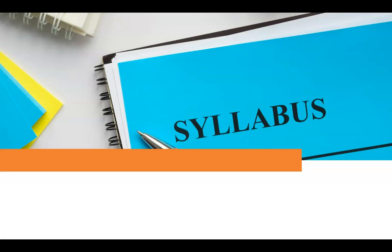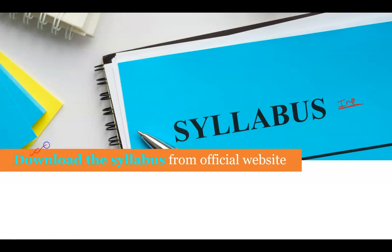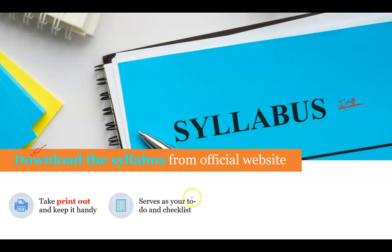The second step for starting your CSIR NET preparation is the syllabus. The syllabus is broad and no one can learn everything — keep that in mind. So you have to select the important topics based on your analysis of previous year question papers and areas which cover the maximum portion of the syllabus. First of all, download the syllabus from the official website, then take a printout and pin it up on your study table. It will act as your to-do list and checklist.